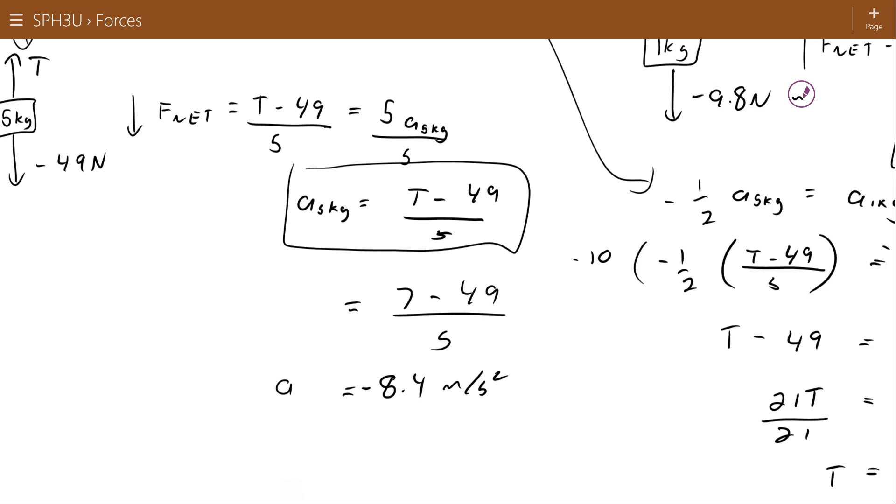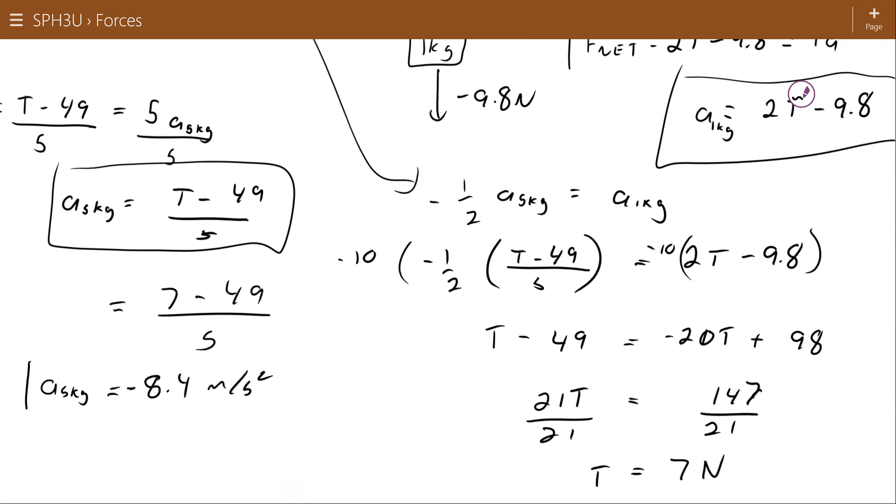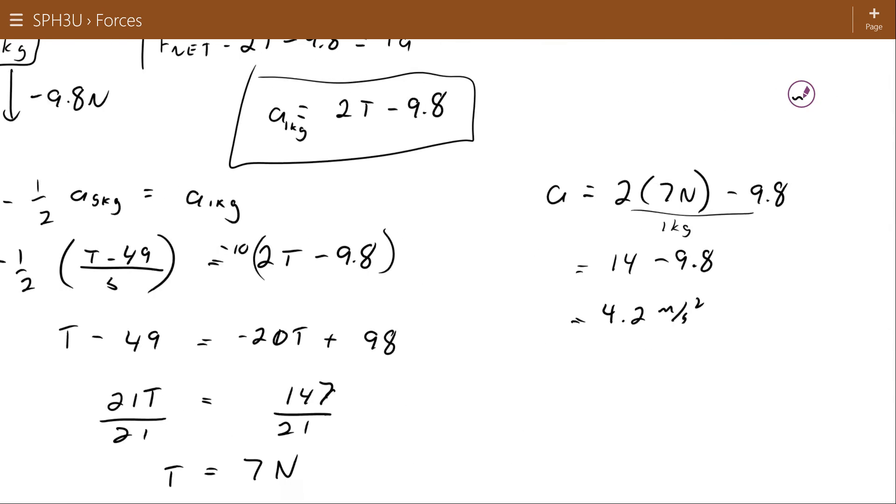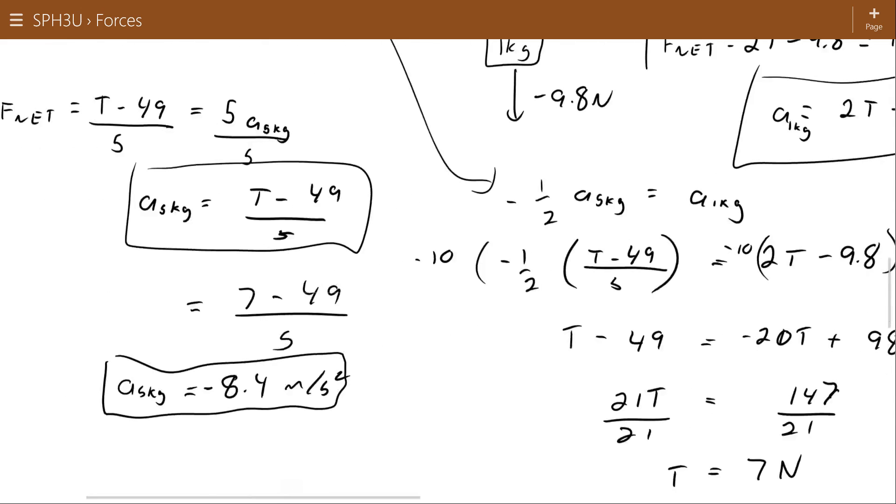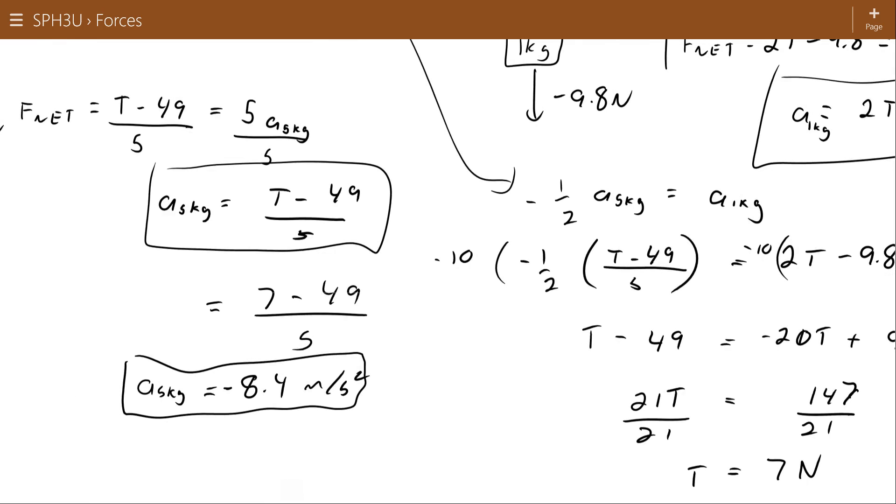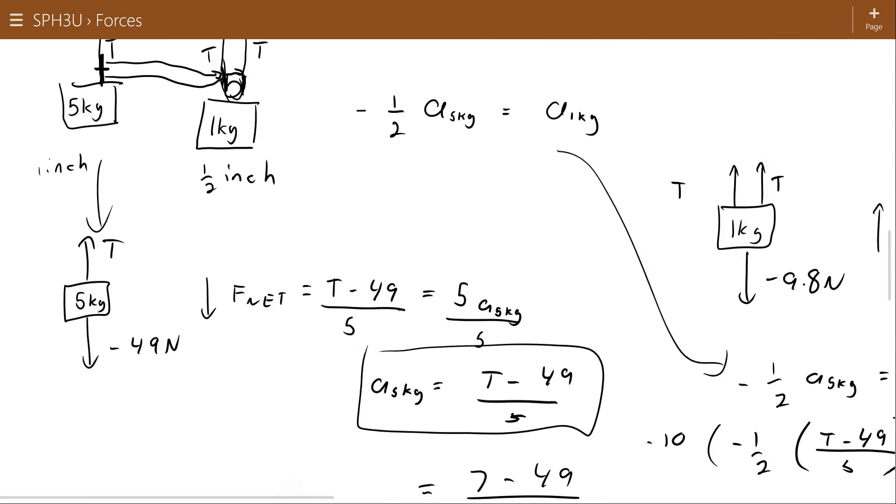And you might have thought, oh shoot, shouldn't those have been the same acceleration? But remember, because of the pulley system, the 1 kilogram should be accelerating half as fast as the 5 kilogram. So one's 4.2, and the other one's negative 8.4. So that's consistent with the overall diagram.